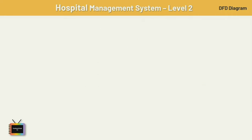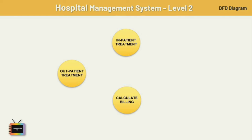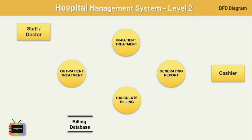Now let's draw the second level DFD diagram. The level 1 DFD represents how the system is divided into subsystems, while level 2 provides more detail about different sub-processes. I am going to draw one level 2 DFD for the billing process. Here we have four processes: inpatient treatment process, outpatient treatment process, calculate billing, and generate report process. We also have two entities — staff or doctor and cashier — and a billing database.